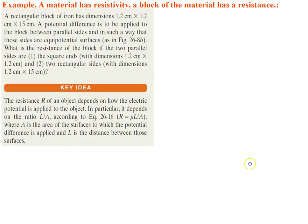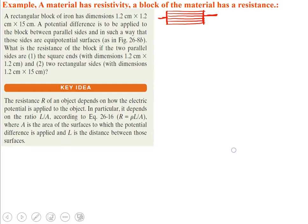Let's do an example. A rectangular block of iron has given dimensions. A potential difference is applied between parallel sides such that those sides are equipotential surfaces. The current density lines J are uniform all the way across between these two parallel surfaces.